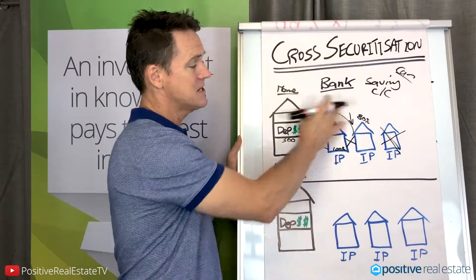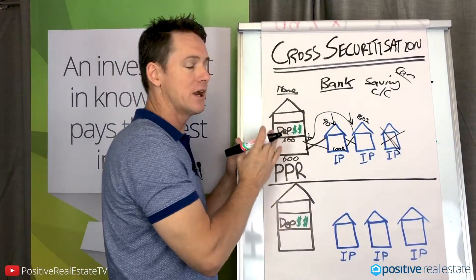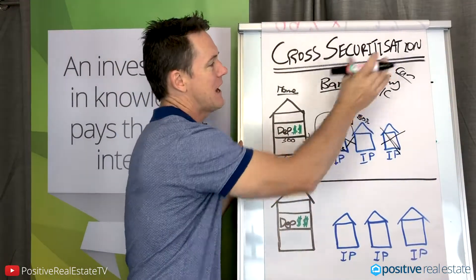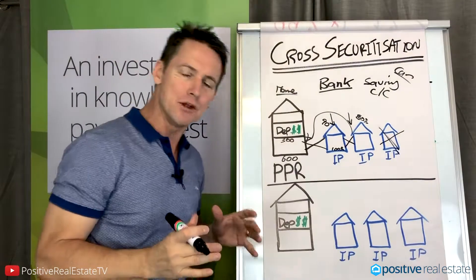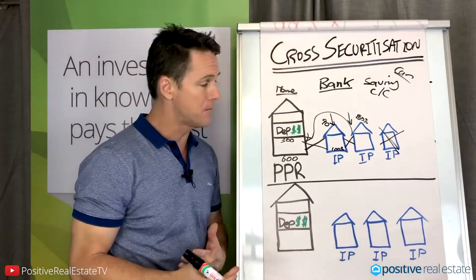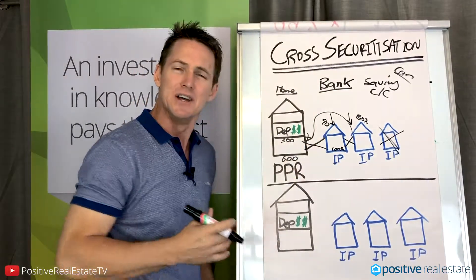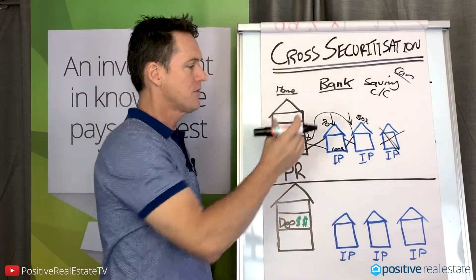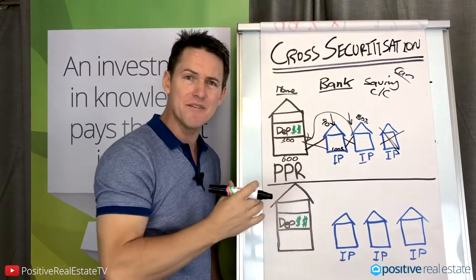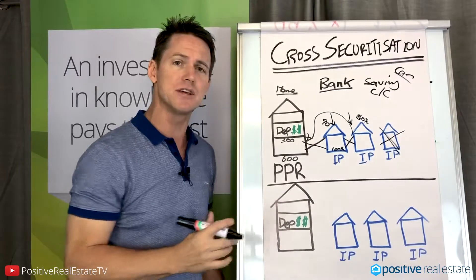Then what happens is you're all tangled up, all bundled up. They've got your home loan, your investment properties, your savings account, your credit cards, your car - they have everything. And this is where I've seen some real challenges for many people. If you start a business or have a challenge in your life, the bank has control of everything. They can take money out of your savings account, credit card, you name it. There are some nasty things they can do.